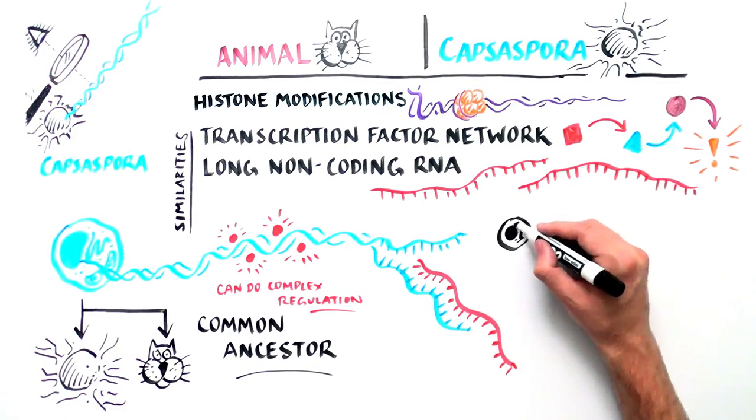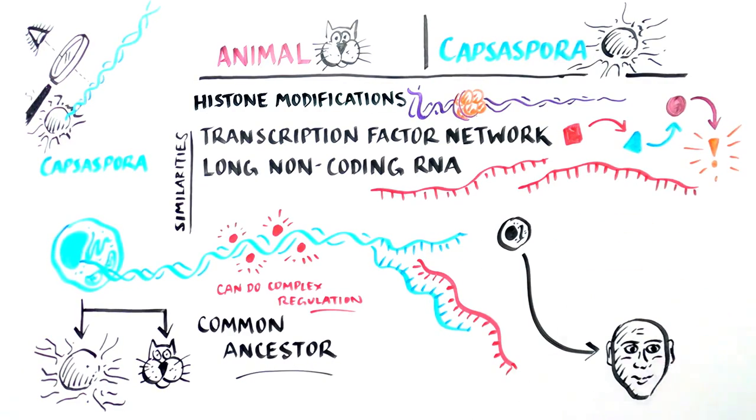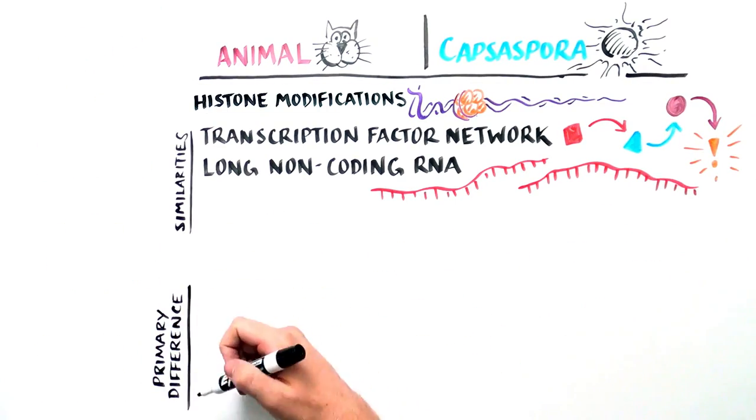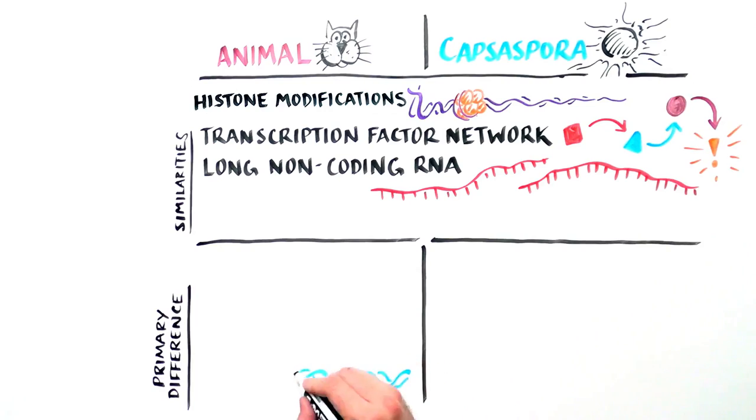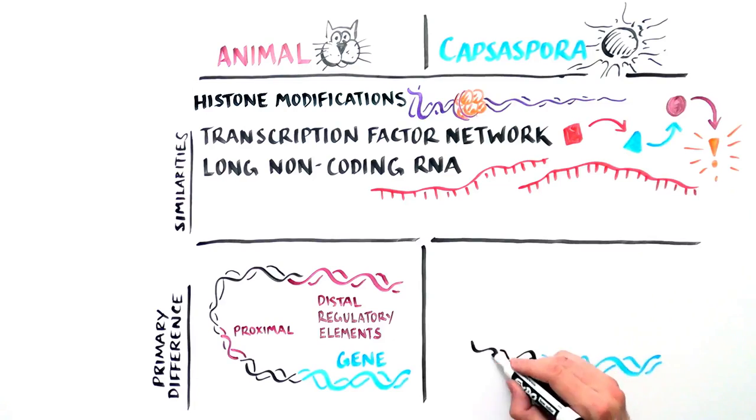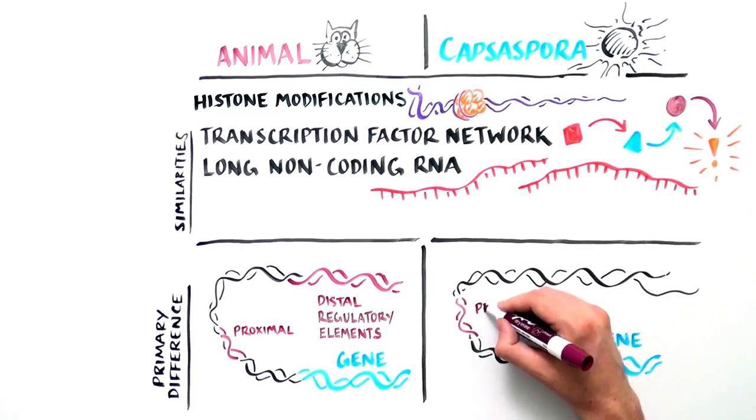Then, what regulatory mechanism was responsible for the evolution of animal multicellularity? A key difference between Capsospora and animals was the presence of distal cis-regulatory sites in the animals which were completely absent in this single-cell amoeba.